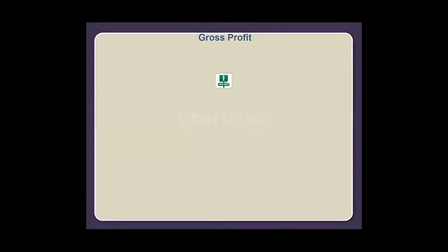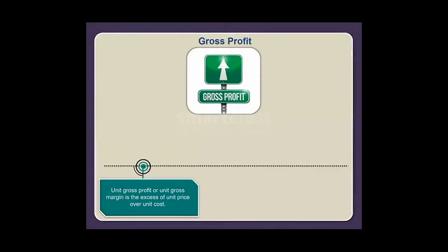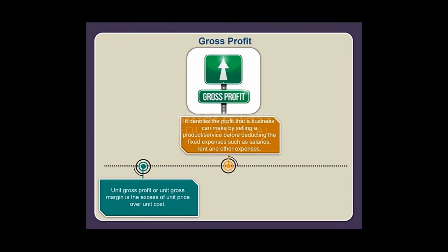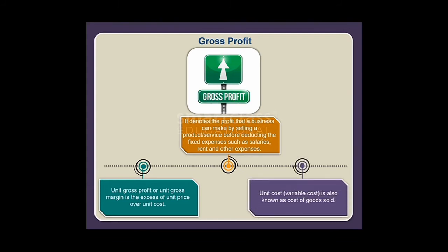Unit gross profit, or unit gross margin, is the excess of unit price over unit cost. It denotes the profit that a business can make by selling a product or service before deducting fixed expenses such as salaries, rent, and other expenses. Unit cost, or variable cost, is also known as cost of goods sold.